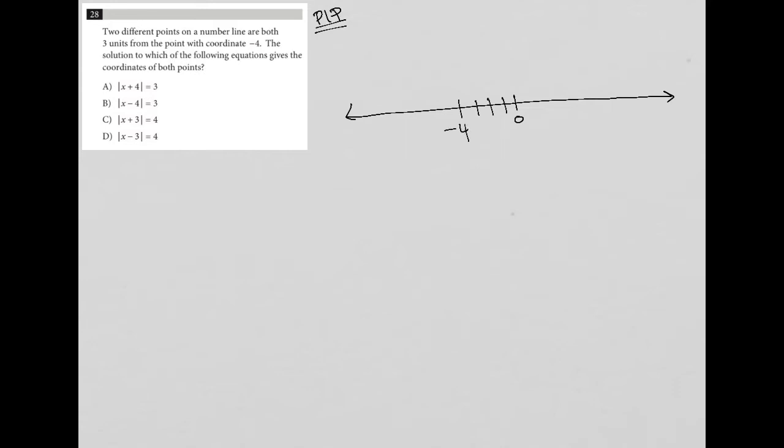So this is negative four. And then we want two different points that are both three units from the point with coordinate negative four. So we could be at negative seven, but we could also be at negative one.